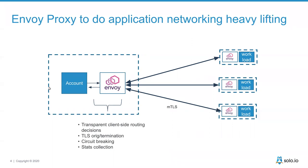Envoy is deployed alongside the application regardless of language or framework, so all communication going out over the network passes through Envoy. Deployed one-to-one with each application, we start to form a mesh. The service mesh builds on this and controls things like TLS or mutual TLS encryption, fine-grained telemetry such as requests per second, failing requests, and retry attempts — giving us a very detailed understanding of what's happening on the network.